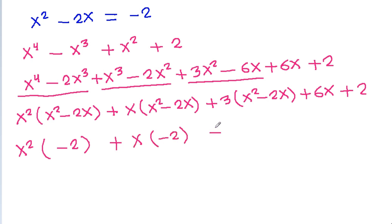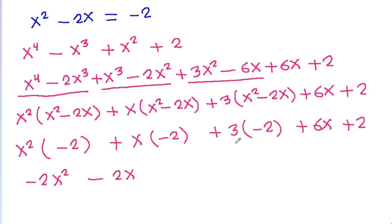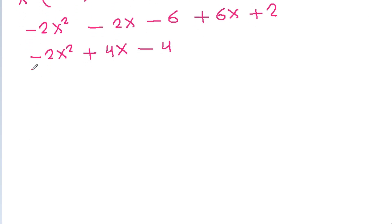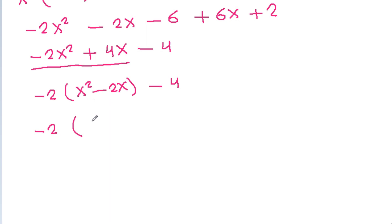Now notice that x² minus 2x equals minus 2. Substituting: 3x² minus 4 and minus 2x² plus 4x becomes minus 2 times (x² minus 2x) minus 4, which is minus 2 times (minus 2) minus 4, giving 4 minus 4, which equals 0.